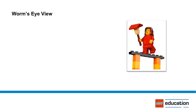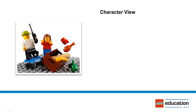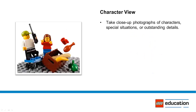Worm's Eye View: Position the scene structure at a suitable height and take a photograph from below. Character View: Take close-up photographs of characters, special situations, or outstanding details. This is especially effective for characterizing and analyzing.